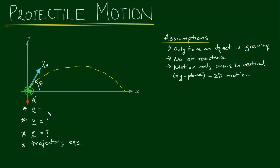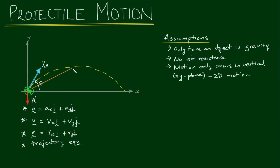The only force acting on the object, drawn as a red vector, is its weight. The acceleration vector will be found in terms of its components: acceleration in the x plus an acceleration component in the y. Same with the velocity vector — it's going to have a horizontal component and a vertical component. And of course, the position vector will also have horizontal and vertical components. From the position vector equation, we can find where the projectile is at any time during its flight, and from the equation of the trajectory we can find quantities such as maximum projectile height.